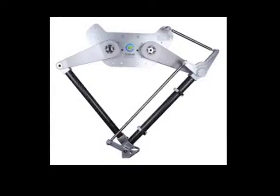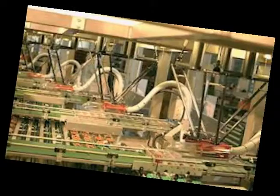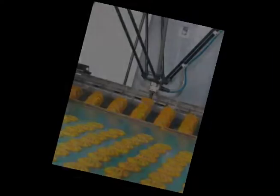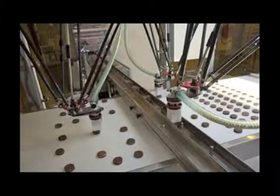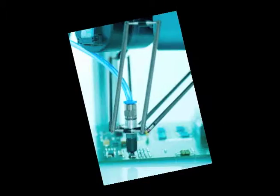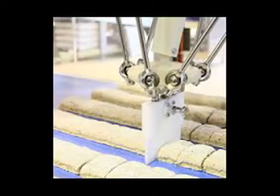A Delta robot is a type of parallel robot. It consists of three arms connected to universal joints at the base. The key design feature is the use of parallelograms in the arms, which constrains the orientation of the end effector. By contrast, a Stewart platform can change the orientation of its end effector.